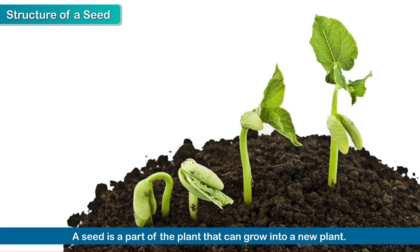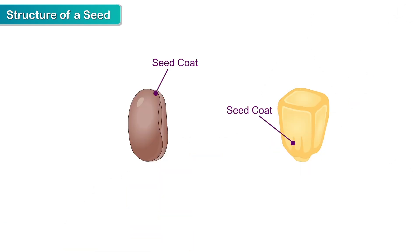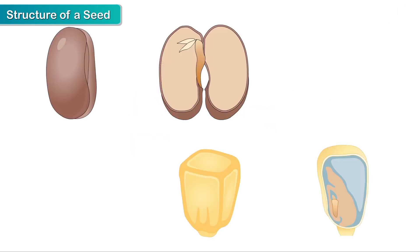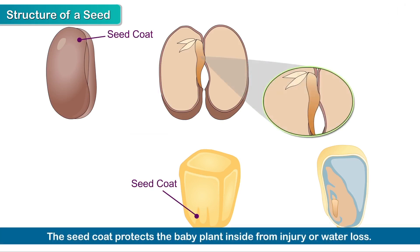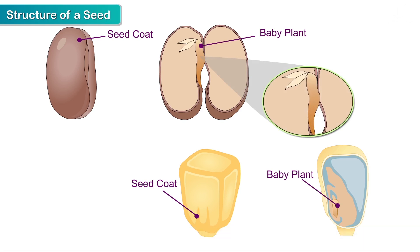A seed is a part of the plant that can grow into a new plant. Let us look at the structure of a seed. It has an outer covering called the seed coat. The seed coat protects the baby plant inside from injury or water loss. The baby plant is also called an embryo.